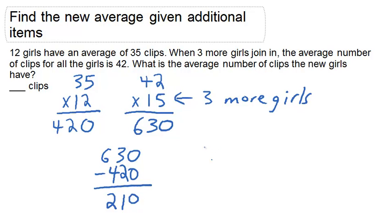And since there's 3 girls, if we divide 210 by 3, that's going to be 70 clips for each of the new girls, or the average number of clips that each of the new girls has.